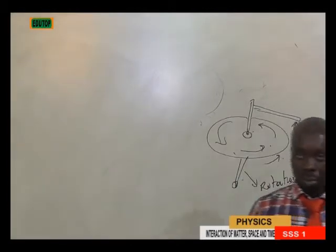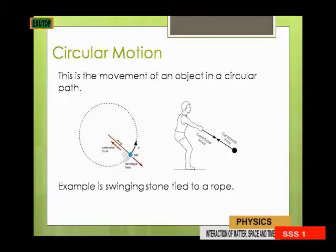Now let's go to the next type of motion — circular motion. There is a difference between circular and rotational. They are almost the same but they are different. This is the movement of circular motion.